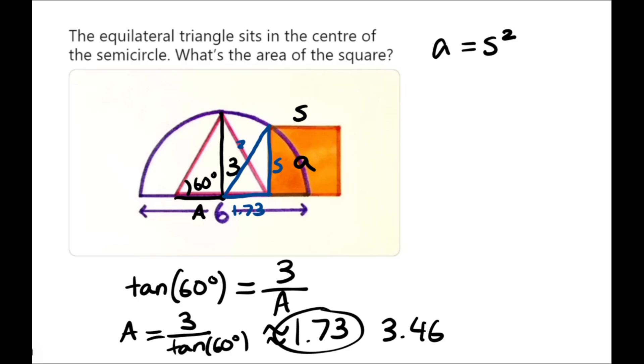Now, this hypotenuse is also going to be 3, because remember, a radius is from the center to the outer edge, and this line here is from the center to the outer edge. So, that's going to be 3. And now, we just need to work out S. We can use Pythagoras theorem.